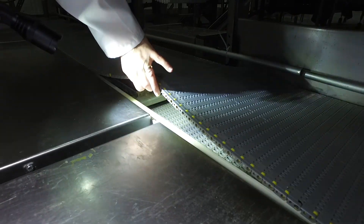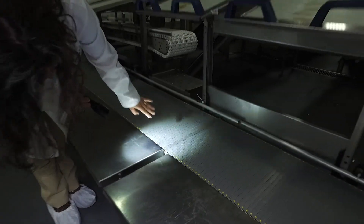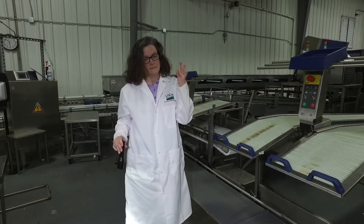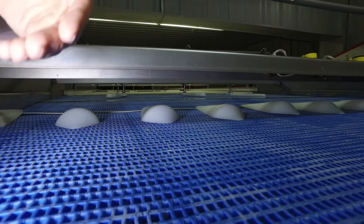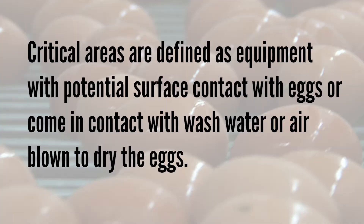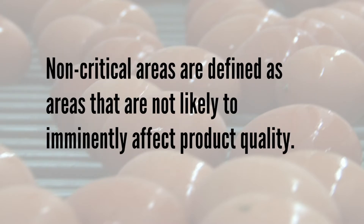So what is organoleptic inspection? Organoleptic inspection assessments include sight, smell, and touch. However, microbial growth will not always be seen, smelled, or felt. Critical areas are defined as equipment with potential surface contact with eggs, or that come in contact with wash water or air blown to dry the eggs. Non-critical areas are defined as areas that are not likely to imminently affect product quality. Non-critical does not mean it is not important. Non-critical unsatisfactory conditions should be addressed after the processing line has been started, unless unable to safely do so during processing.